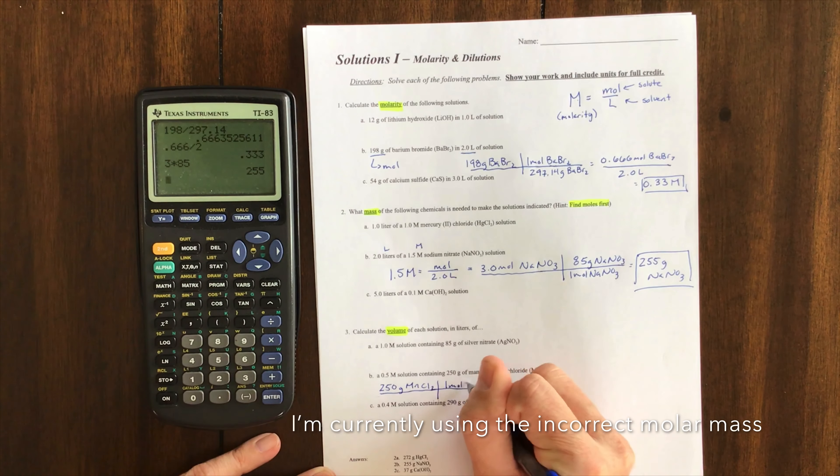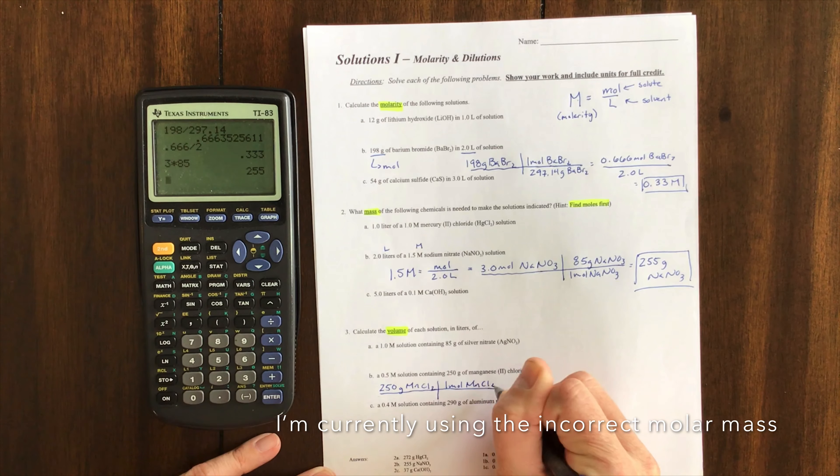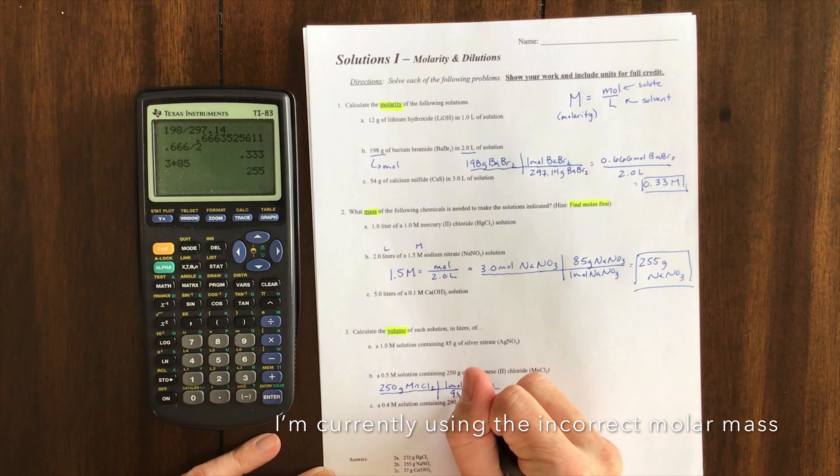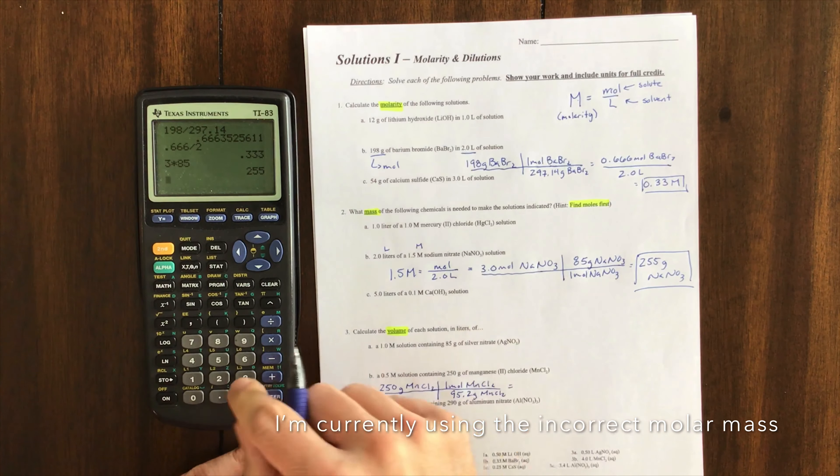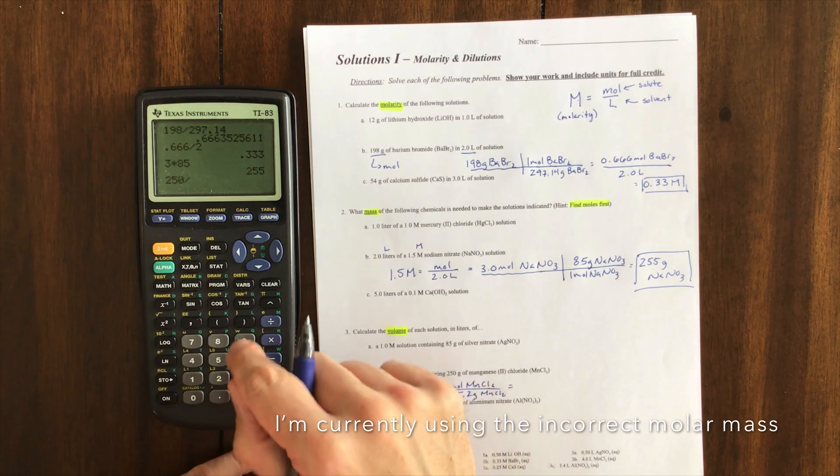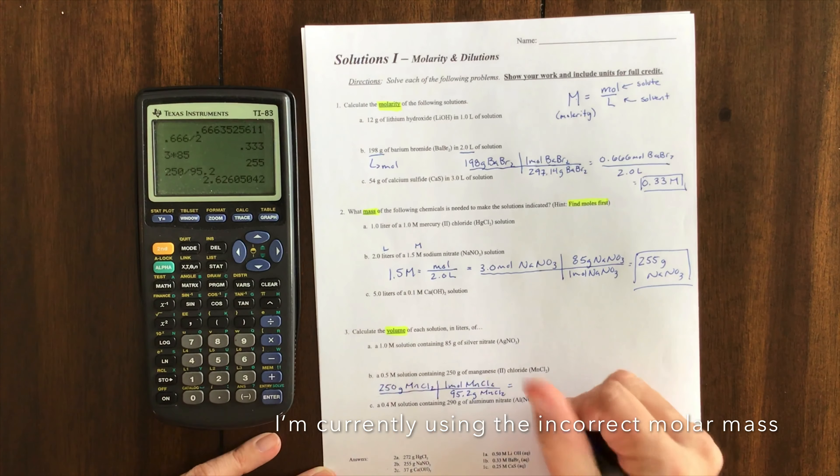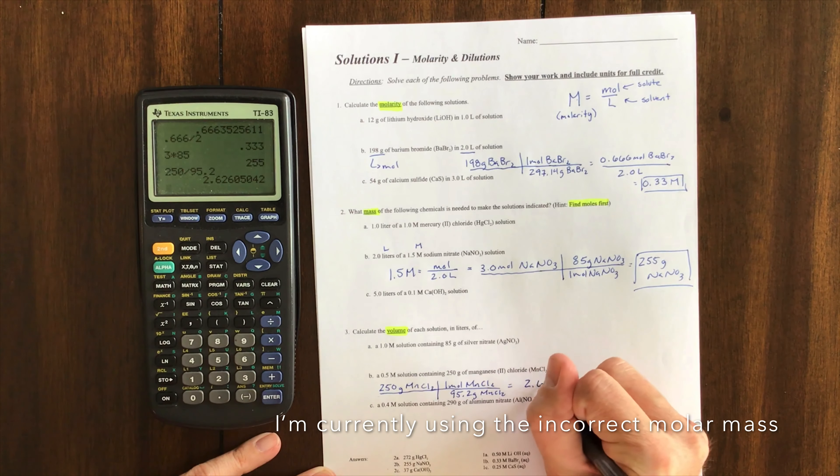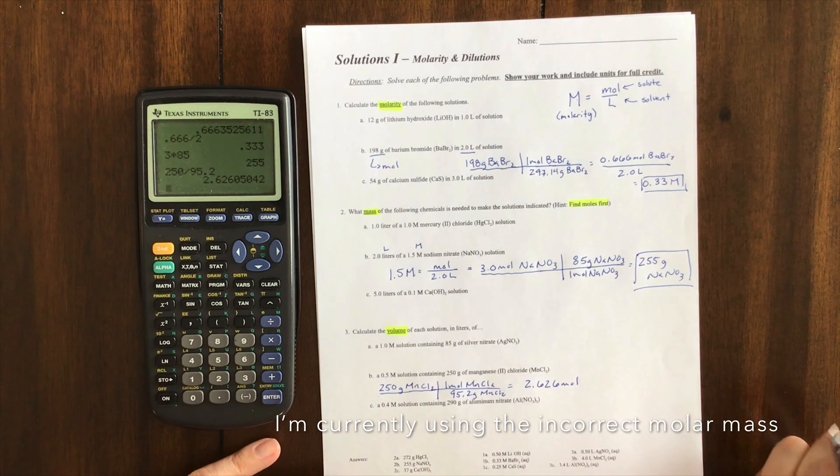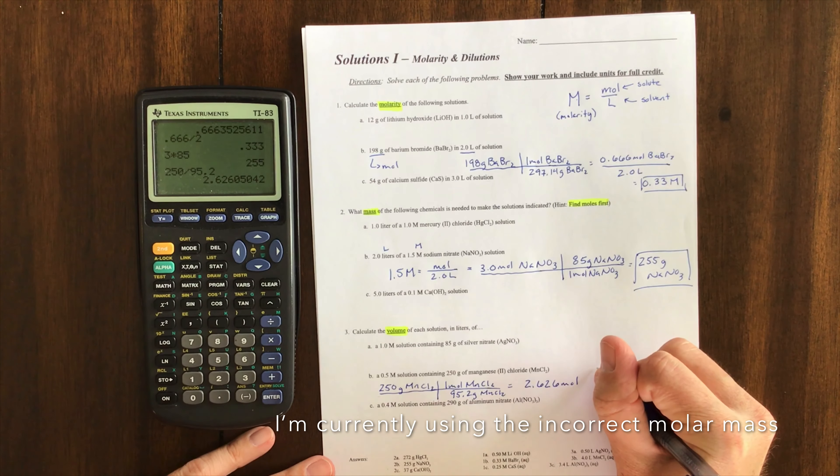If I do this first, I have one mole of calcium chloride, and I look that up—that is 95.2 grams. So now I'm going to plug that into my equation: 0.5 molar equals 2.626 moles over liters.